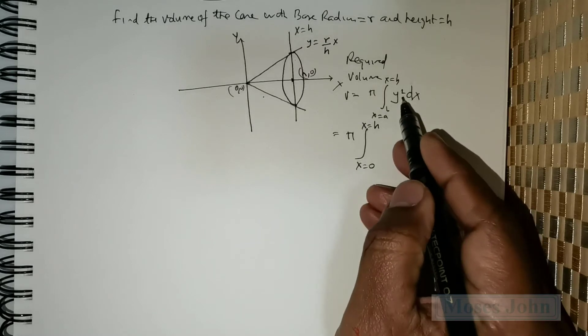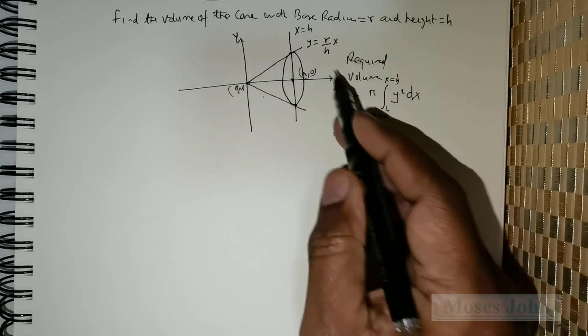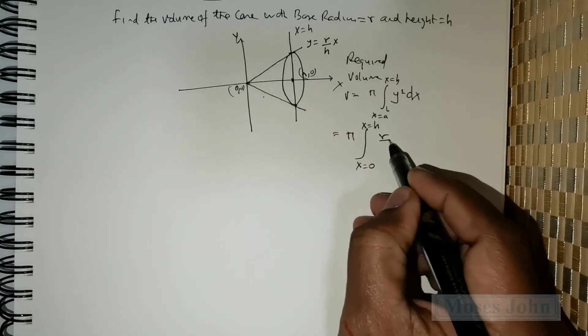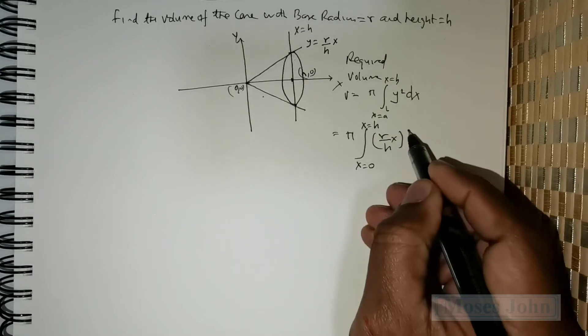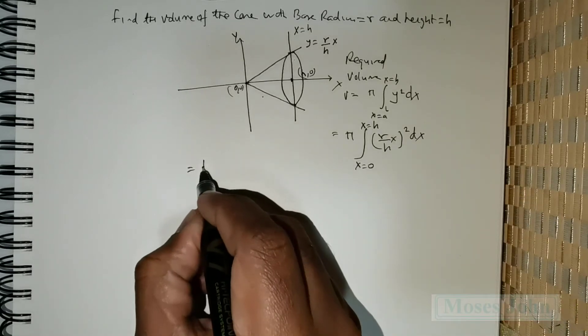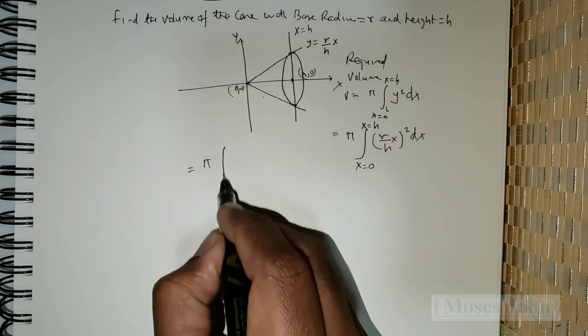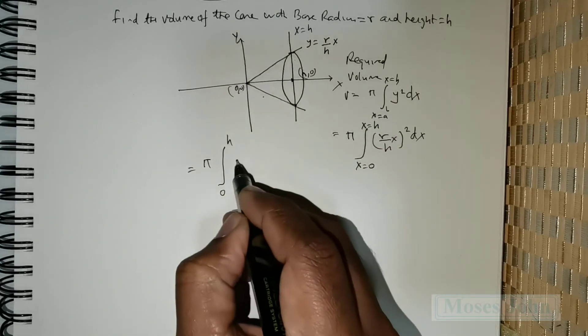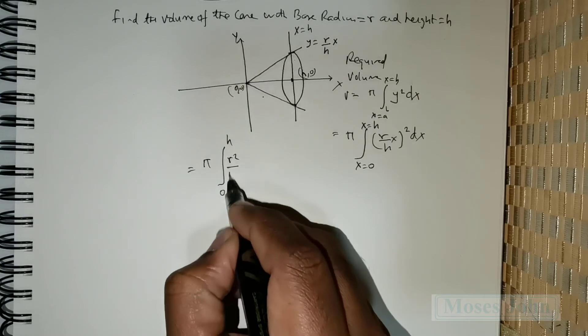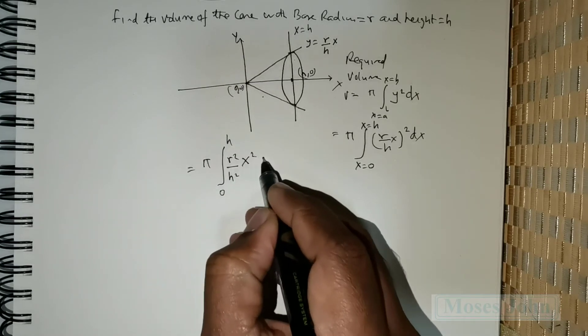And y squared, my y is r divided by h times x. So it's going to be r over h times x raised to the power 2 times dx. I can rewrite it as pi times integral 0 to h of r squared divided by h squared times x squared times dx.